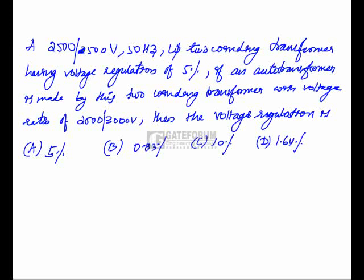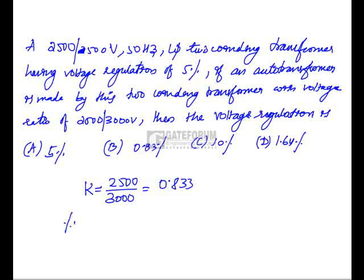2500 by 500 volts, 58 single phase two winding transformer having voltage regulation of 5 percent. If an auto-transformer is made by this two winding transformer with voltage ratio of 2500 by 3000, then voltage regulation is?